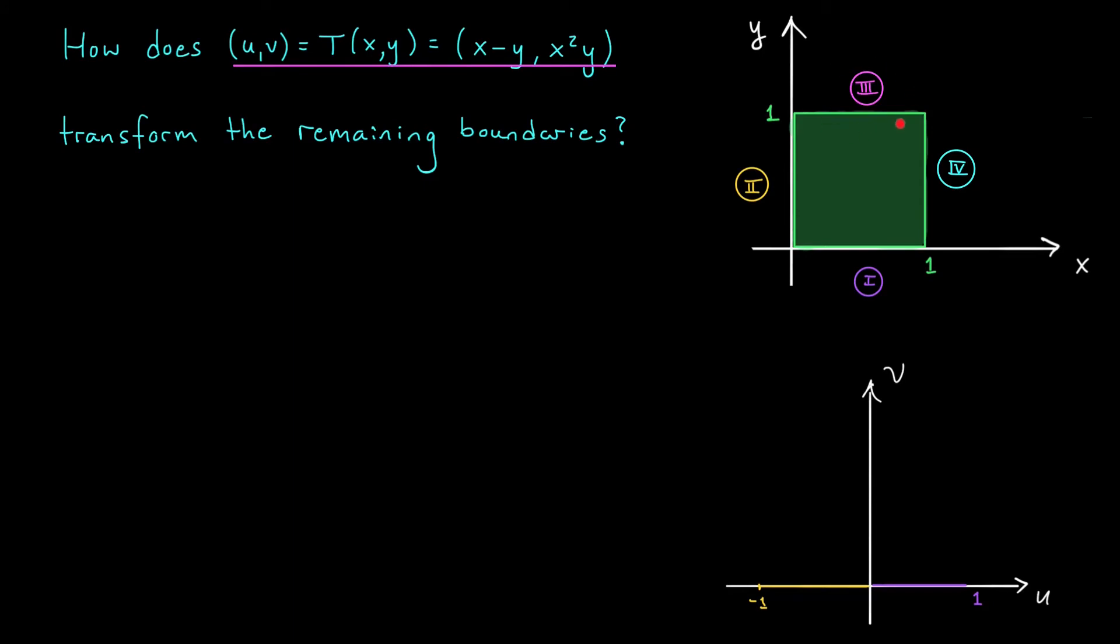What does T do to our third boundary component? This component lies on the line y = 1, but our x values are restricted to lie between 0 and 1. So just like before, we're going to feed this equation to our function T, and it's going to give us back points uv = T(x,1). And if you plug those values in, you're going to get (x-1, x²). It's not completely clear to me what this curve is going to look like. I know that u is given by x-1, and v is given by x², and x is allowed to range between 0 and 1, but I'm still not completely sure how to draw it.